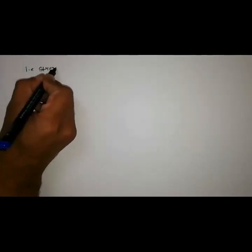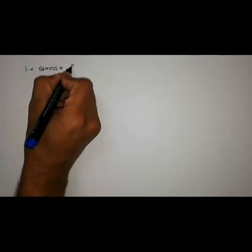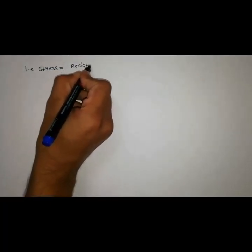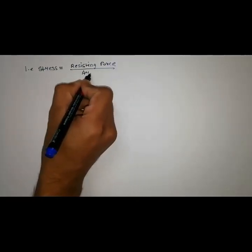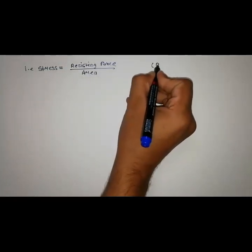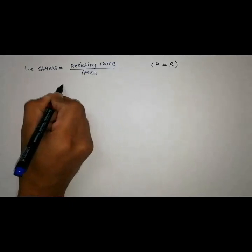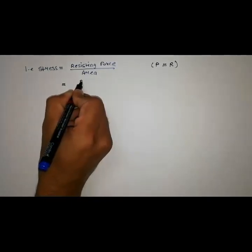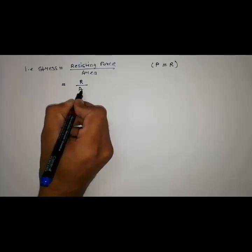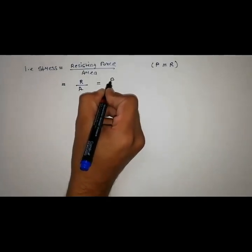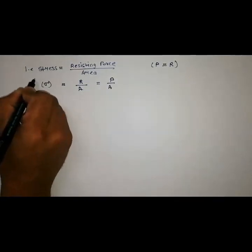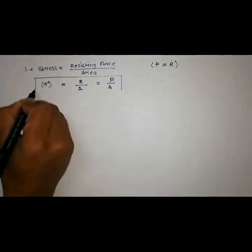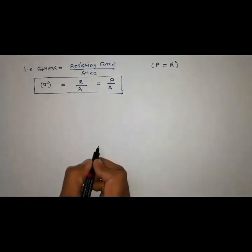That is, stress is equal to resisting force upon area. As we know, external load P is equal to R. Therefore, we can write R for resisting force and A for area, and here P instead of R as they are same. And stress, as we know, is denoted by sigma. So we get the formula: sigma is equal to P by A.